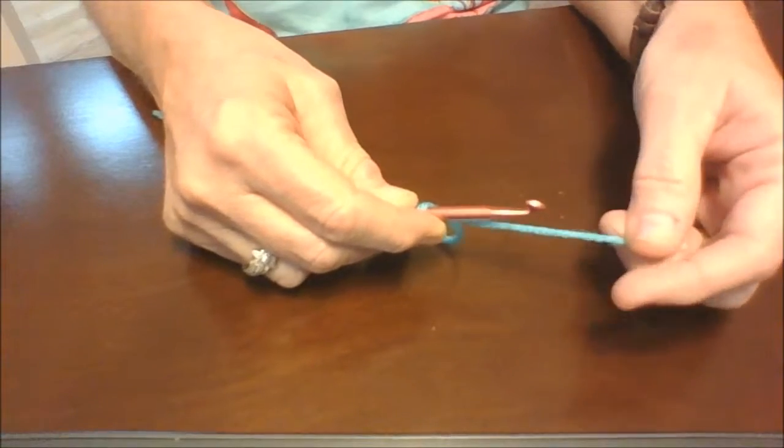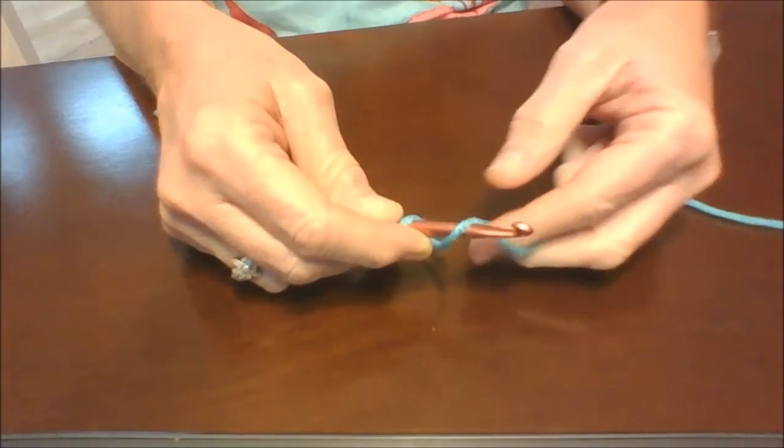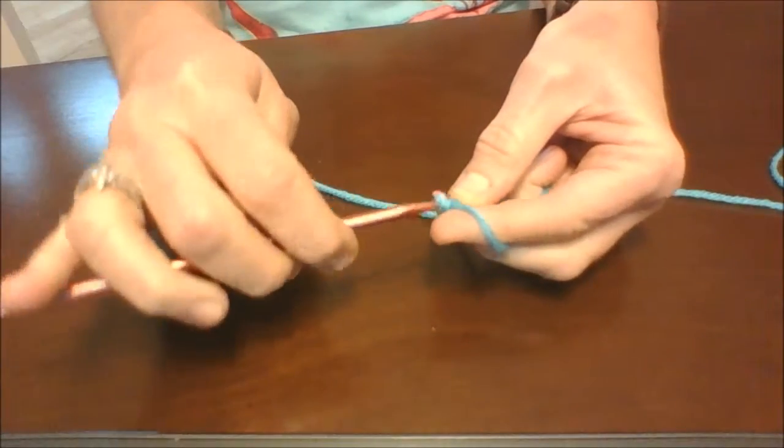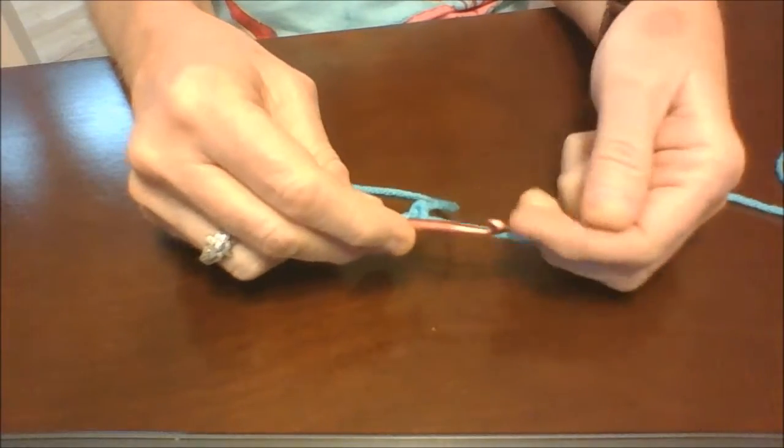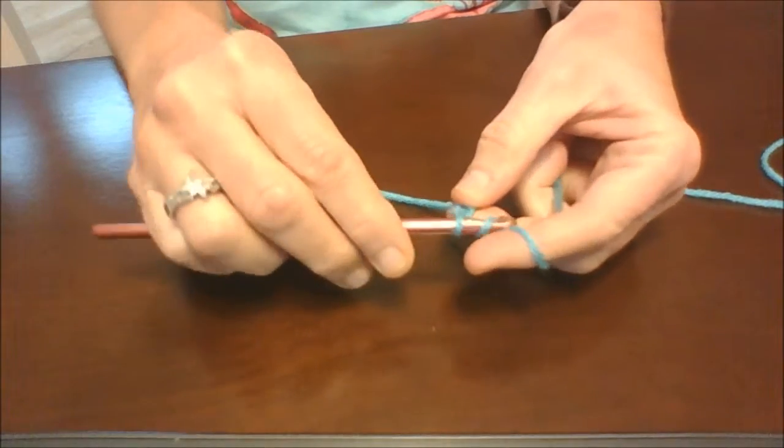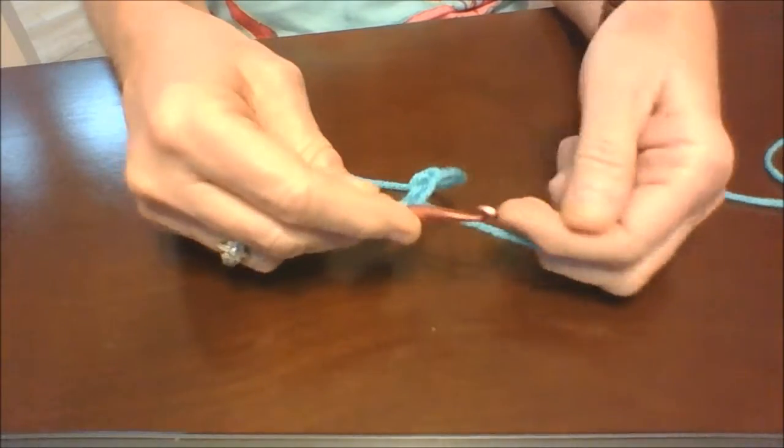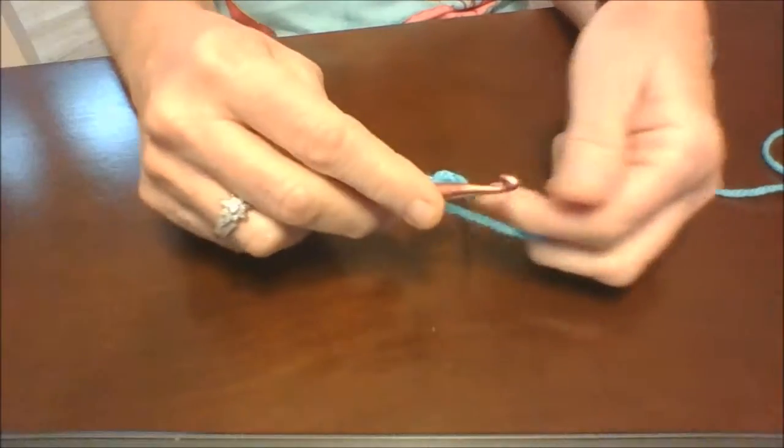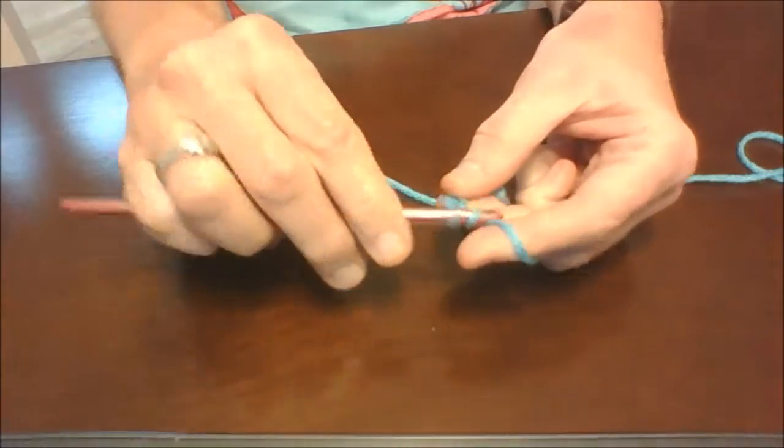So anyway, you're going to take the long end, and you're going to loop it around your hook. And then you're going to pull it through that loop there. And that's all there is to it. Loop it around, pull it through the other loop. Loop it around, pull it through.